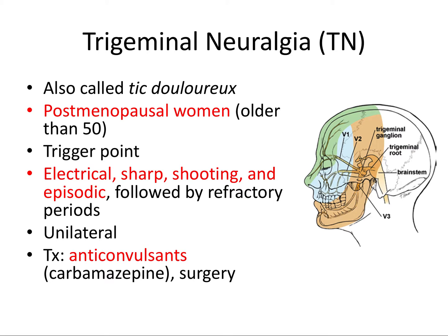It's typically unilateral — it's going to affect one side of the face — because it'll affect one side of the cranial nerve. So it could be V1, V2, and V3 all of the left side of the face, or of the right side of the face. Rarely, it's bilateral, affecting both the right and left sides.